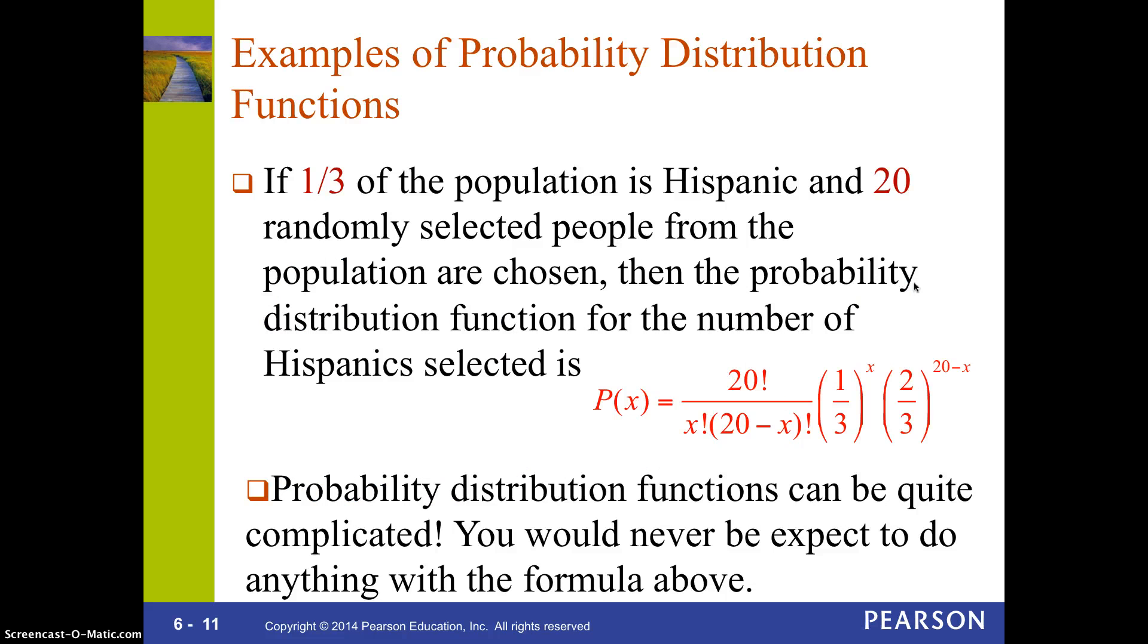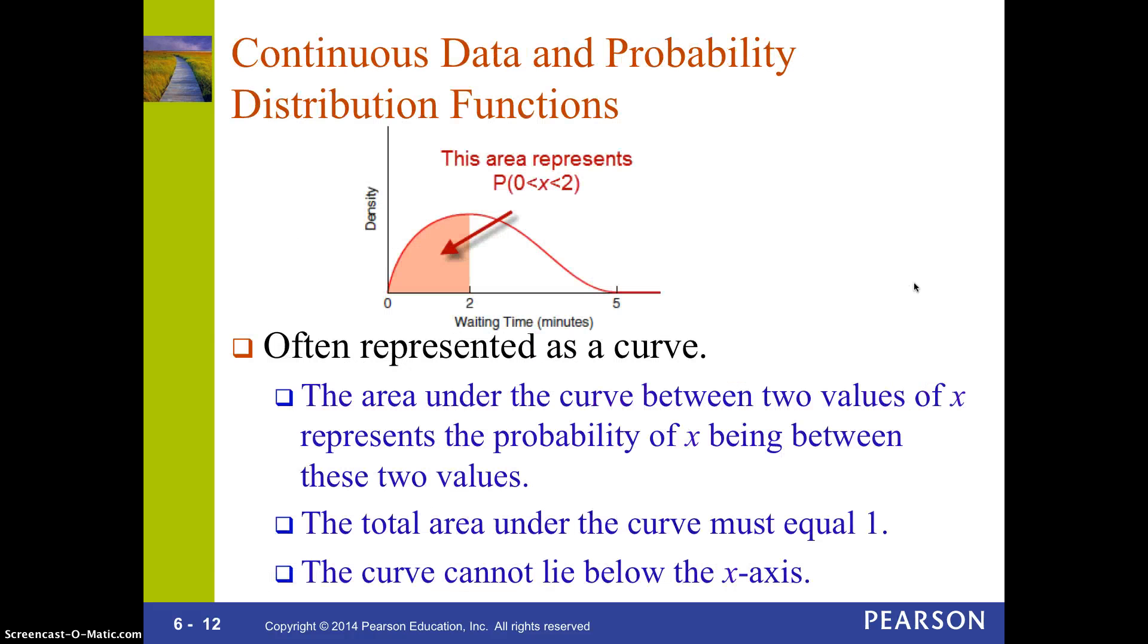Sometimes, probability distribution functions for discrete data could be a formula. So, in this case, you notice that formula looks very complicated. I'm just giving you an example of how it is not always represented in a table or a graph. Sometimes, it's represented in a formula. I would not expect you to ever be able to work with this formula. It's just an example of how they can actually get very complicated.